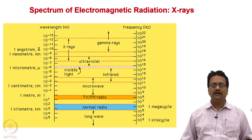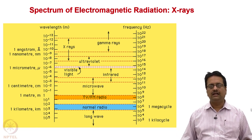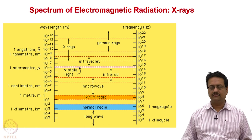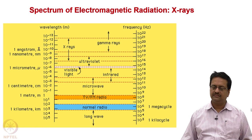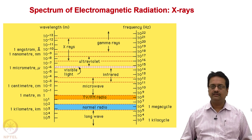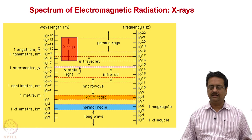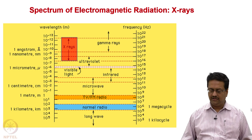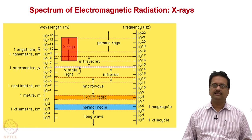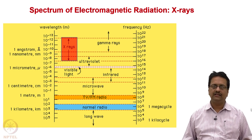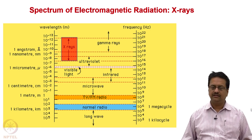We are interested to learn X-ray crystallography using X-ray radiation. As we are all aware, the spectrum of electromagnetic radiation spans a range of wavelengths. The X-rays fall in the region of about 10 to the power minus 10 meters. The wavelength is extremely small and X-rays are highly penetrating in nature, which is why we use X-ray radiation to identify crystal structures.